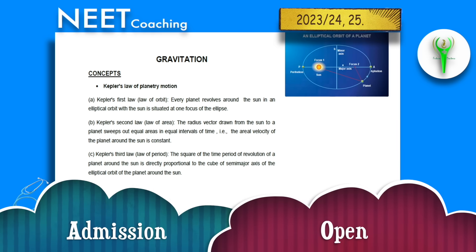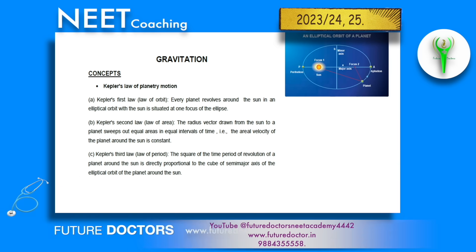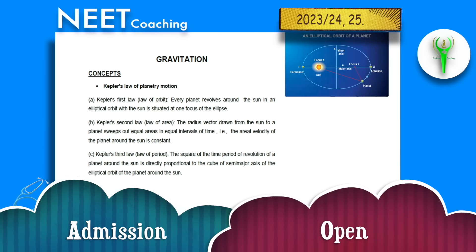Gravitation — Kepler's laws of planetary motion. There are three laws of planetary motion which were given by, or proposed by, Kepler. That is called Kepler's laws of planetary motion.